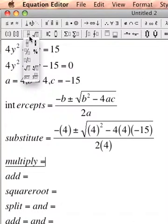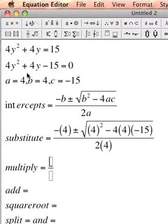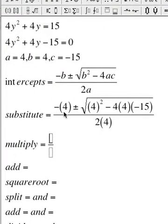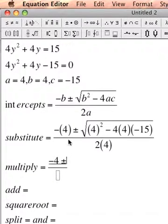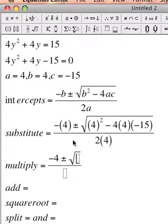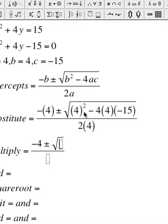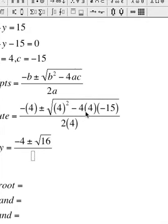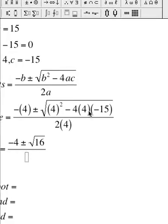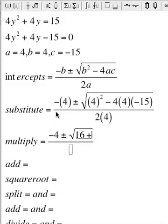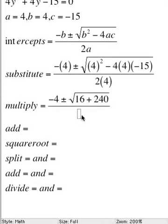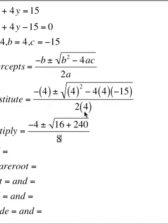Now next step, when I multiply, well negative times 4 is negative 4. Still keep my plus minus, still keep my square root. 4 times 4, 4 squared is 16. And I'm going to have negative 4 times 4 is negative 16. Negative 16 times negative 15 is positive 240. And 2 times 4 in my denominator is 8.